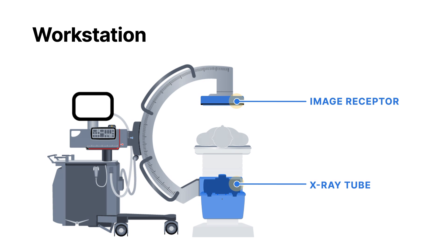The C-shaped arm connects the x-ray tube and image receptor and allows movement without the risk of misaligning the x-ray tube and the image receptor. We'll be discussing C-arms in greater detail in a future lesson.